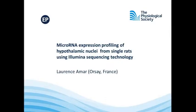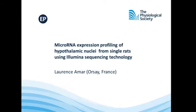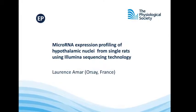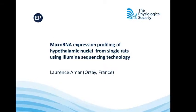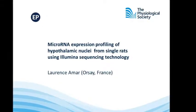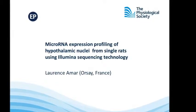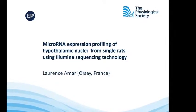In the first report, Lorenz Amar and her co-workers describe the use of high-throughput Illumina sequencing to identify short non-coding microRNAs in hypothalamic arcuate nuclei.